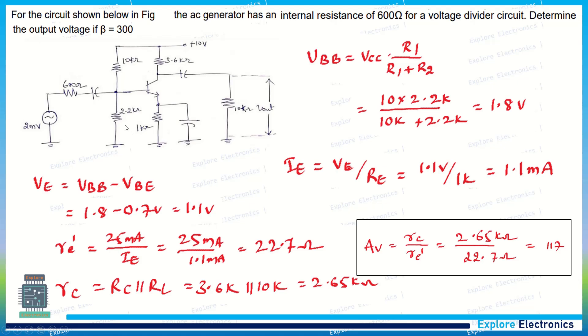We need to find VBB by using the voltage divider rule. Assuming this is R1 and this is R2, we get VBB as 1.8 volts.